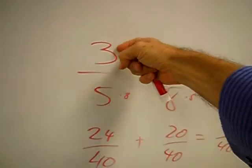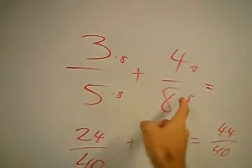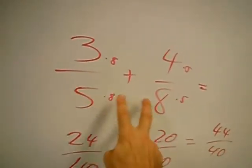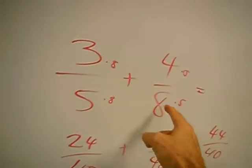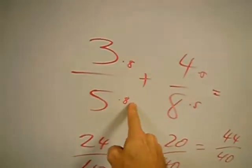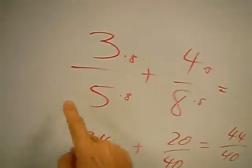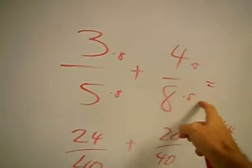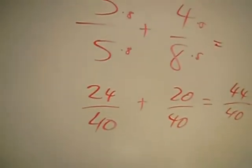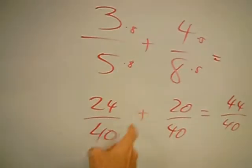We basically have 3 and 4 on top of two other numbers. These numbers are not the same, so we take the 8 and multiply it top and bottom of this side, and we take this 5 and multiply it top and bottom. This gives us 8 times 3, 24.